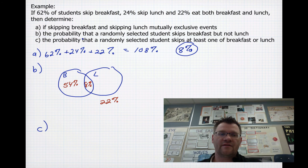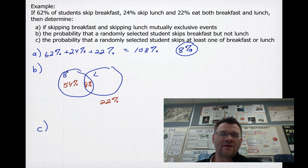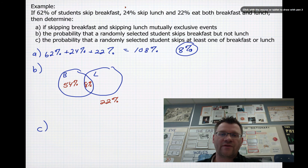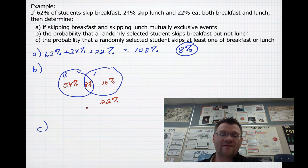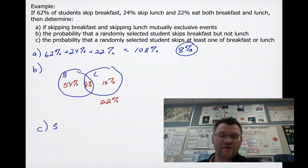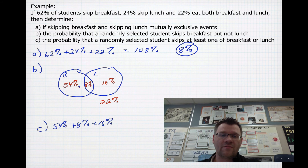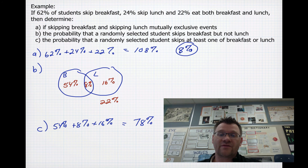Part C asks for the probability that a randomly selected student skips at least one of breakfast or lunch. That means they could be skipping breakfast only, lunch only, or both. We need to fill in the last section: 24% skip lunch, 8% skip both, so subtracting gives us 16% who skip lunch only. To answer the final question: 54% plus 8% plus 16% — because it could be breakfast, lunch, or both — gives us 78% of students who skip at least breakfast or lunch.